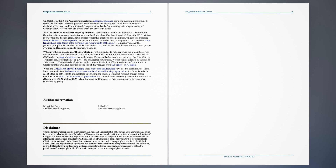The Fiscal Year 2021 Consolidated Appropriations Act, in addition to extending the eviction moratorium (Division N, Section 502), included $25 billion for states and localities to fund emergency rental assistance (Division N, Section 501). Author Information: Maggie McCarty, Specialist in Housing Policy; Libby Pearl, Specialist in Housing Policy.